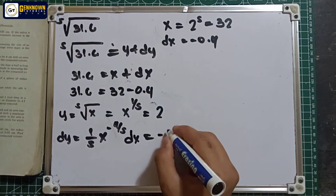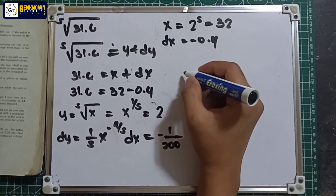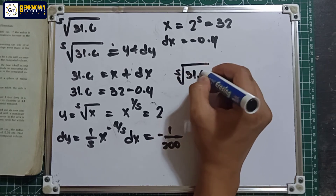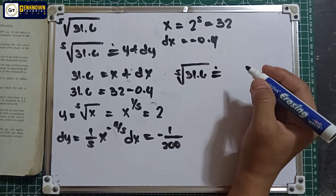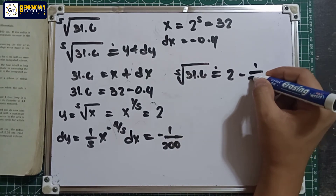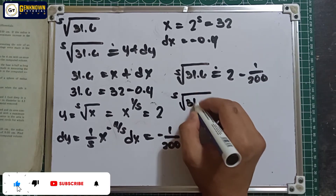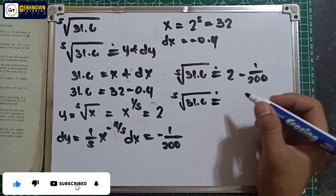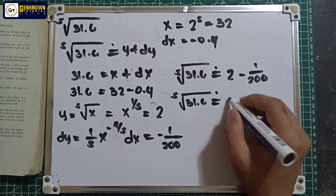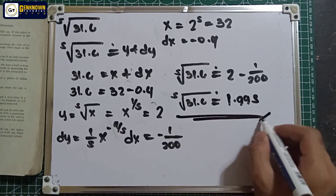So dy equals negative 1/200. Therefore, the fifth root of 31.6 is approximately equal to y plus dy: 2 minus 1/200, which equals 399/200 or 1.995. This is the answer for number 5.